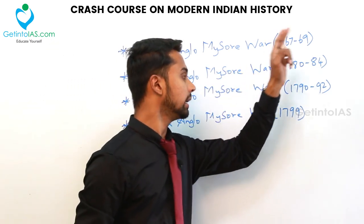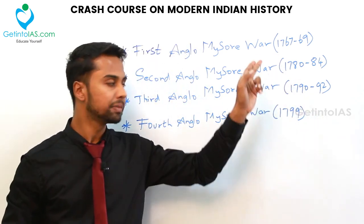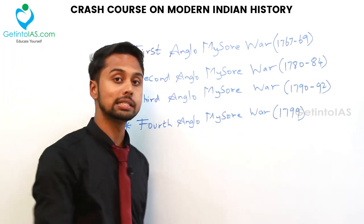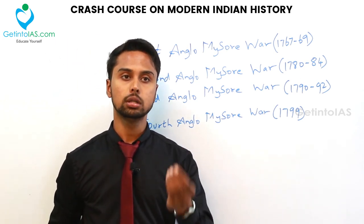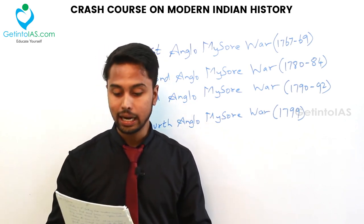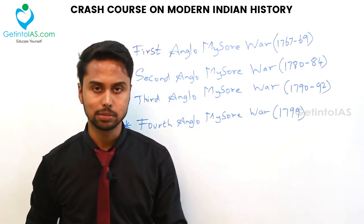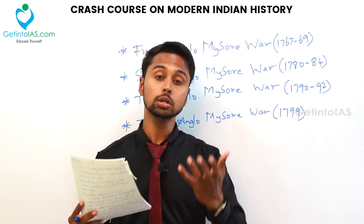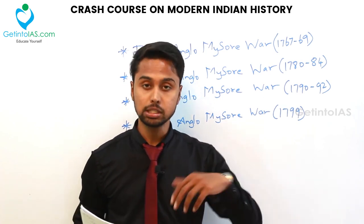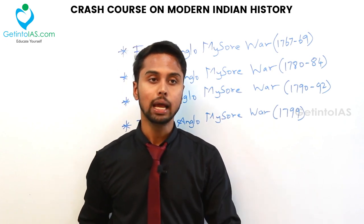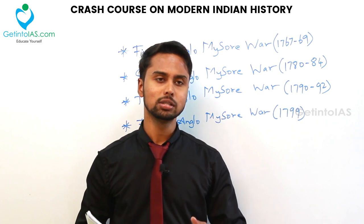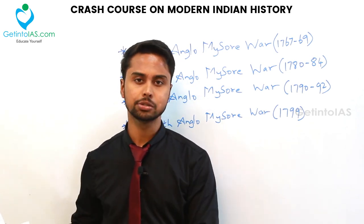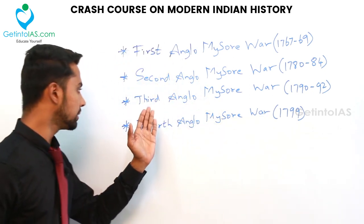The Second Anglo-Mysore War ended with Hyder Ali's death in 1782 and the Treaty of Mangalore was signed. From the Third Anglo-Mysore War onwards, Hyder Ali's son Tipu Sultan came to power. Tipu Sultan had great interest in the French Revolution — he planted a tree of liberty and was a member of the Jacobin Club. He also tried to involve the French and Turks against the British, and was acquiring the territory of Travancore (an ally of the British), which greatly irritated the British.